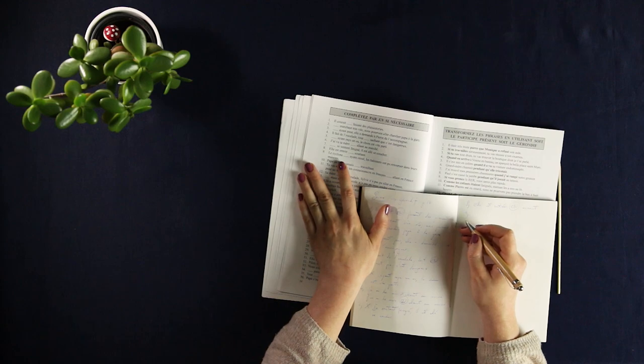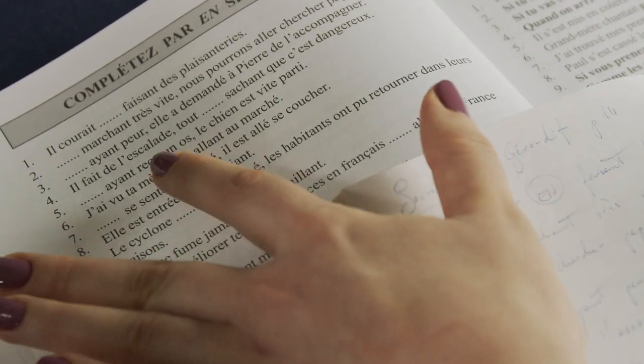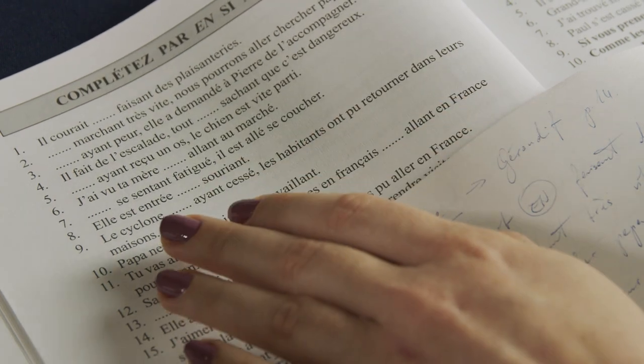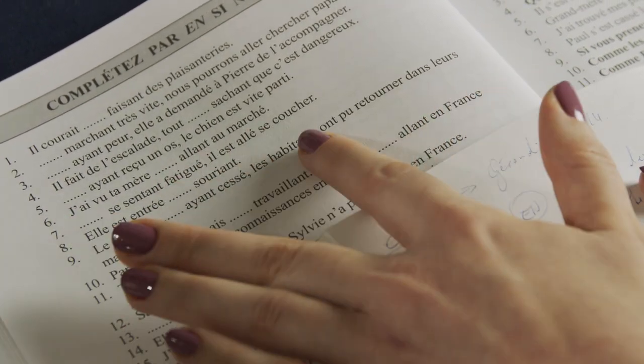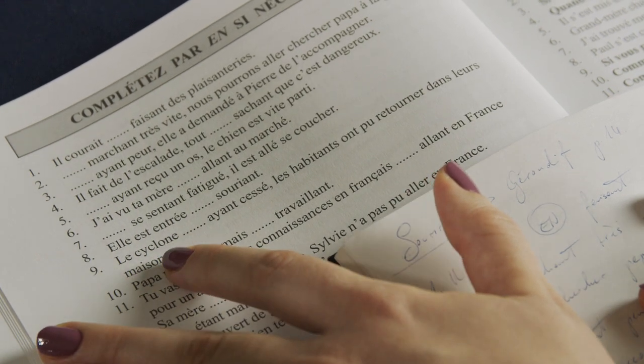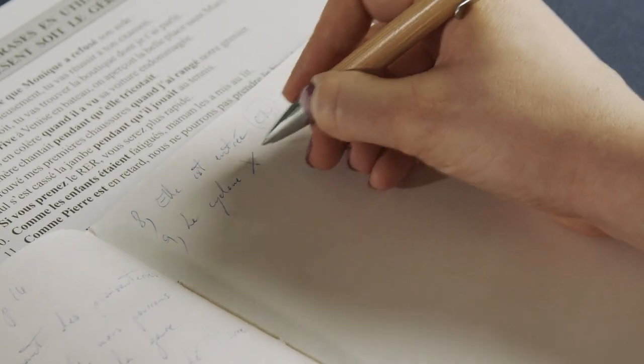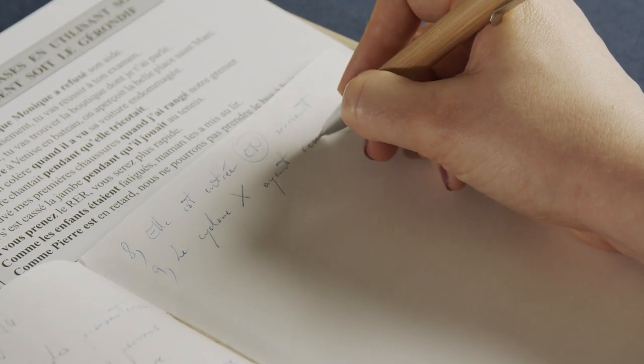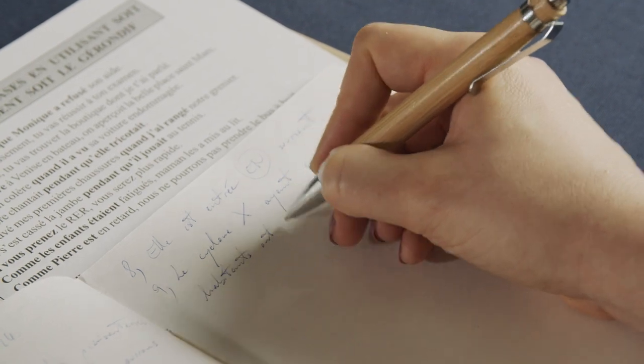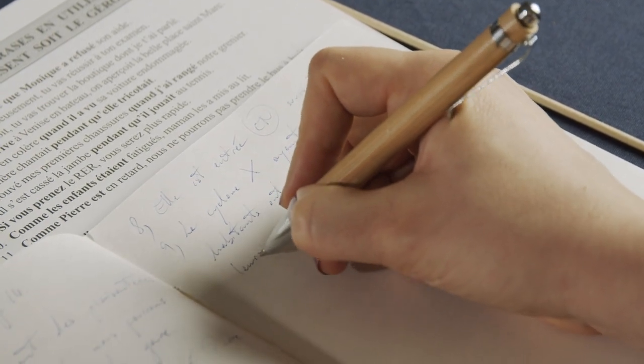Nine, we have: Le cyclone ayant cessé, les habitants ont pu retourner dans leur maison. So here we have the same case as with the dog. The cyclone is over, so now the inhabitants can return to the houses. So two different moments in time plus two different subjects: the cyclone, the inhabitants. Le cyclone ayant cessé, les habitants ont pu retourner dans leur maison.